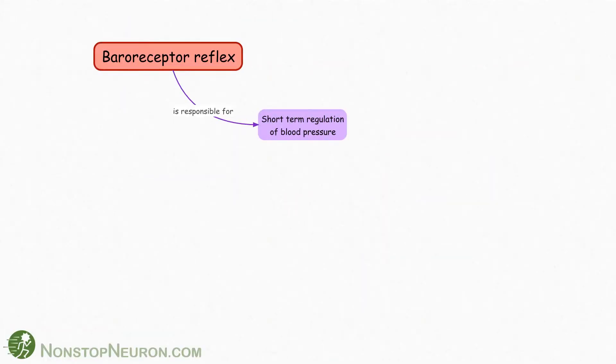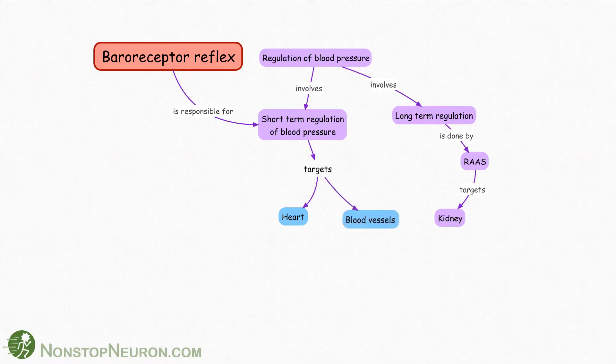Baroreceptor reflex is responsible for short term regulation of blood pressure. Regulation of blood pressure involves short term regulation and long term regulation. Long term regulation is done by renin angiotensin aldosterone system and it targets the kidney. Short term regulation on the other hand targets heart and blood vessels as we will see next.